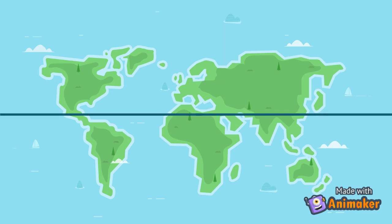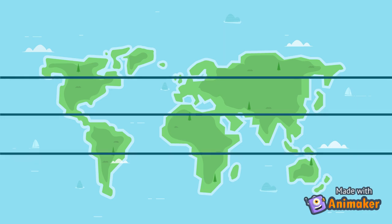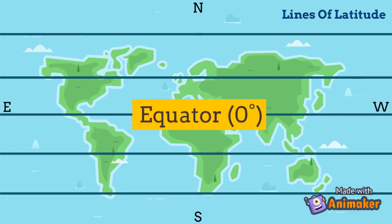The earth is divided into imaginary lines on its surface that help us to distinguish the climate zones. These lines are called the lines of latitude, that run in an east-west direction and measure the north-south of the earth's surface. The equator is the most important line of latitude because it is from here where we can measure other lines of latitude.